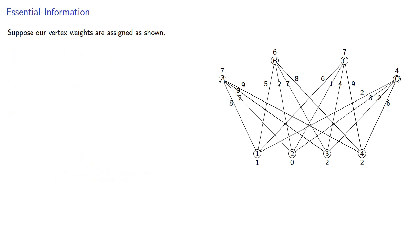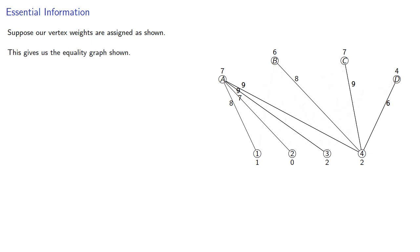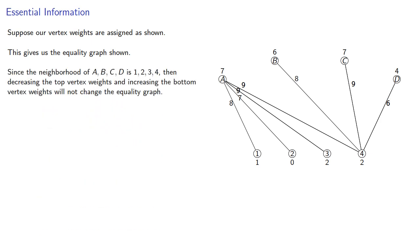So let's go back to our problem. And suppose our vertex weights are assigned as shown, which will give us the equality graph. And since the neighborhood of ABCD is 1234, then decreasing the top vertex weights and increasing the bottom vertex weights will not change the equality graph. But we still can't find a perfect matching.